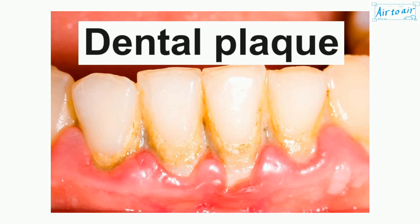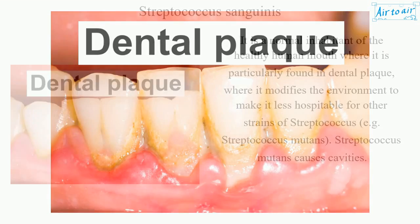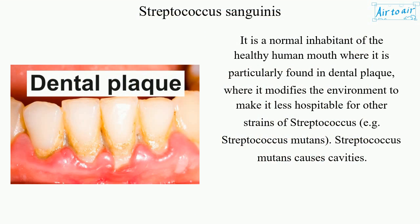It is a normal inhabitant of the healthy human mouth where it is particularly found in dental plaque, where it modifies the environment to make it less hospitable for other strains of Streptococcus, e.g. Streptococcus mutans, which causes cavities.